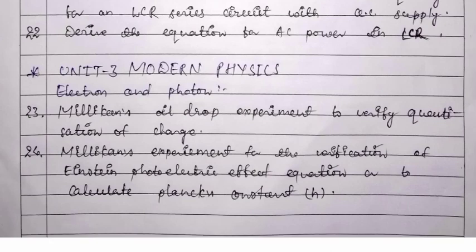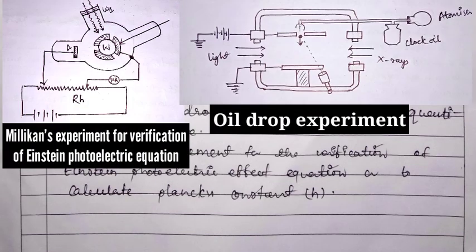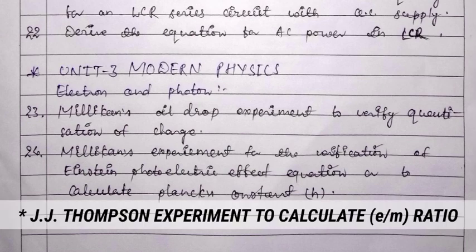In modern physics, the first chapter on electrons and photons includes: Millikan's oil drop experiment to verify quantization of charge, Millikan's experiment for verification of Einstein's photoelectric equation and to calculate Planck's constant, and J.J. Thomson's experiment to calculate the charge-to-mass ratio.